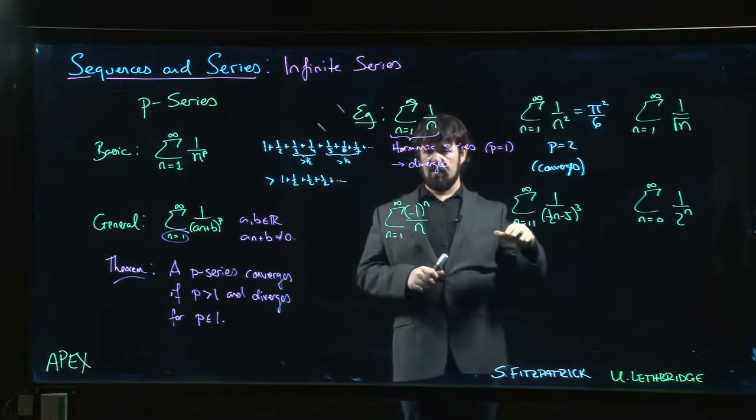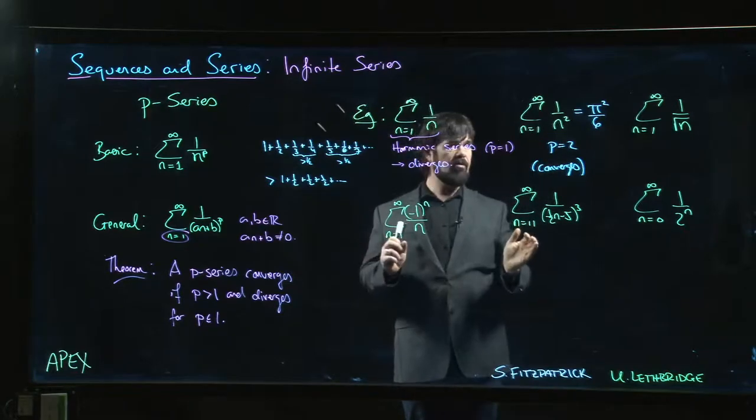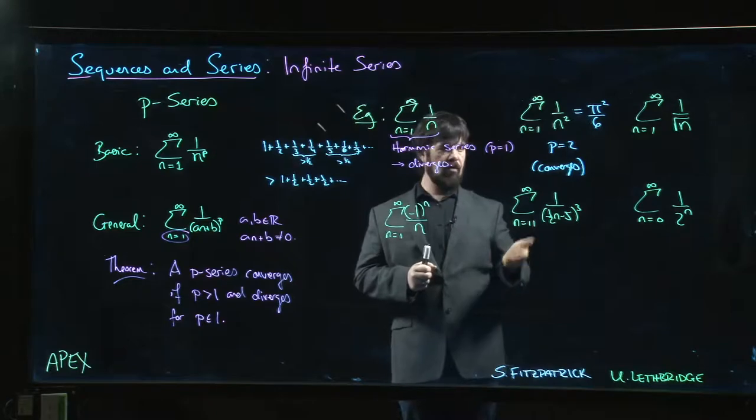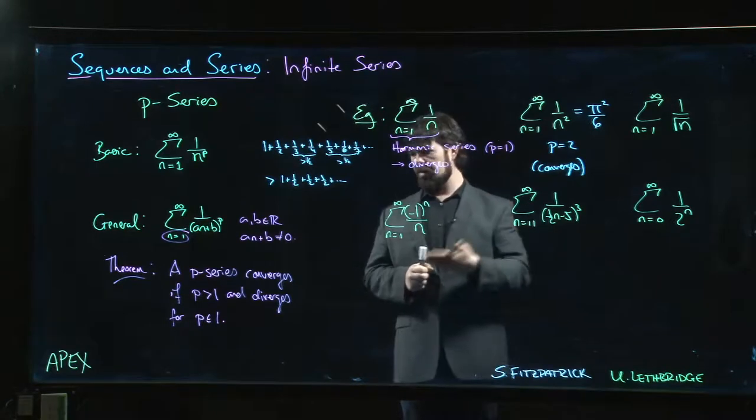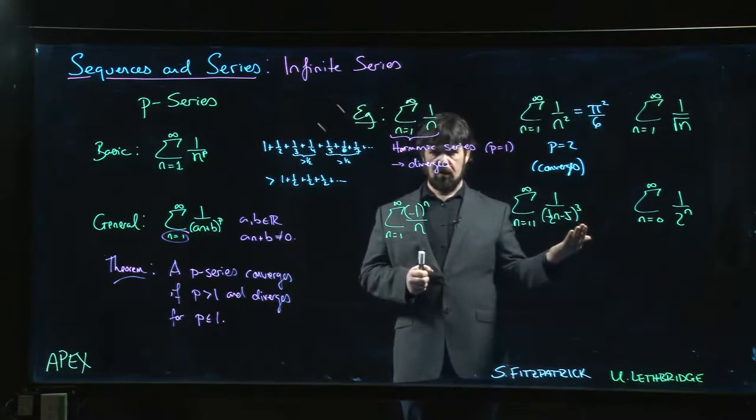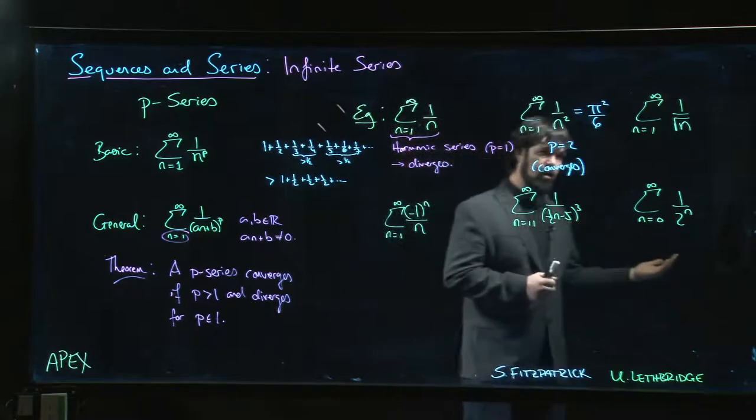Maybe more interesting, as far as I know, if we go to 1 over n cubed, nobody actually knows what that adds up to. We know it converges - it's p-series with p equal to 3. p is bigger than 1, it converges. Nobody knows what it converges to. Odd.